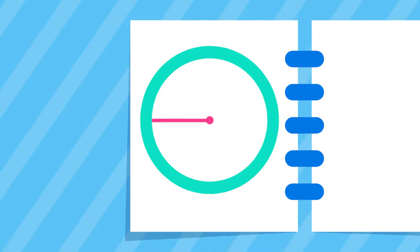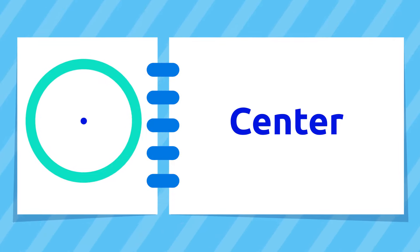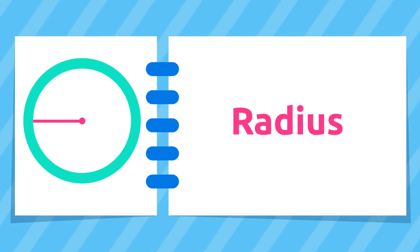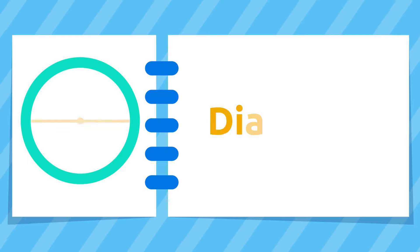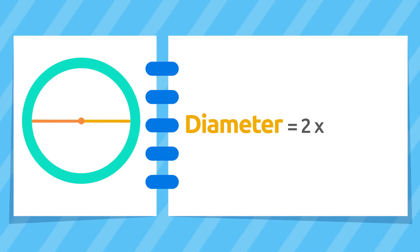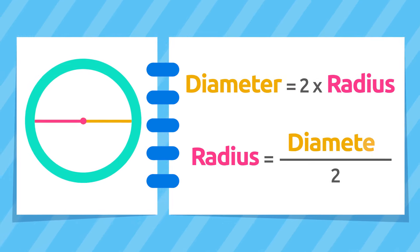To start with, let's recap some elements of the circumference: the center, the radius, and the diameter. Remember that the diameter is twice the radius, or in other words, the radius is half the diameter.